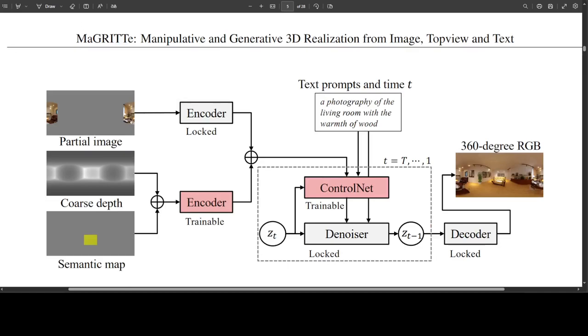Now if you look at this pipeline of generating 360-degree RGB from a partial image, you can see that the coarse depth map, semantic map, and text prompts are there. The partial image, coarse depth, and semantic map are embedded in the common latent space using encoders, and their channels are concatenated along with text prompt. 360-degree RGB is generated in the framework of ControlNet based on LDM.